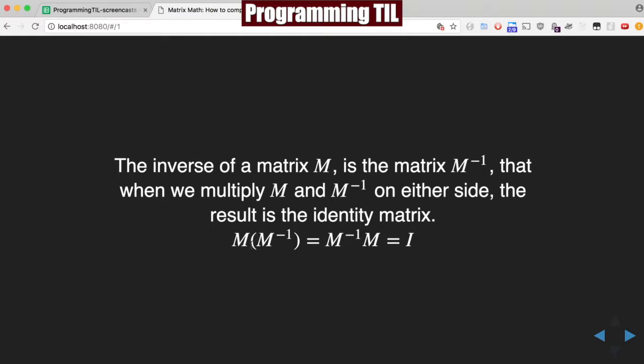And it works either direction: M times M to the negative 1, or M to the negative 1 times M equals I. So I'm going to refer to this as the inverse matrix. M inverse matrix or inverse matrix M is equal to I.